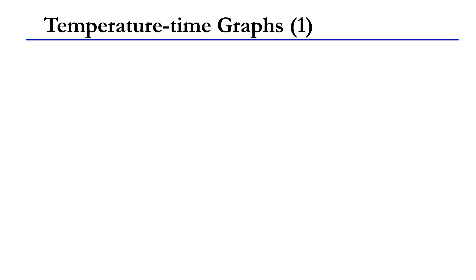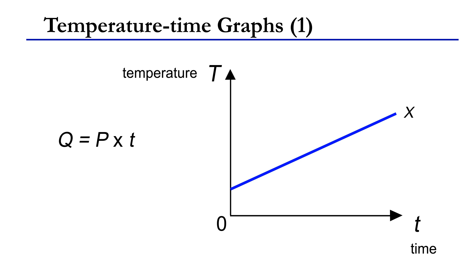Assume that the power P of the heater is a constant. The heat supply Q is directly proportional to the time taken t. This is because Q equals P times t. Therefore, the temperature time graph Tt graph is similar to the TQ graph.